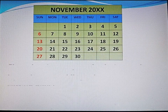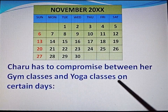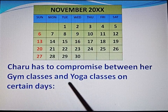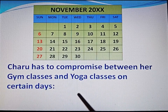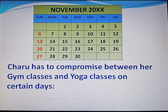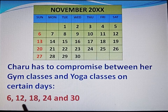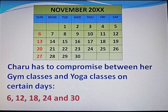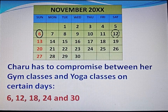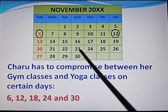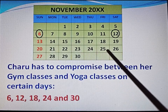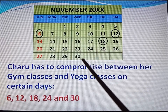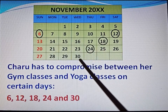This calendar is given. Charu has to compromise between her gym classes and yoga classes on 5 days — that is 6, 12, 18, 24 and 30. So mark in the calendar: 6, 12, 18, 24 and 30.